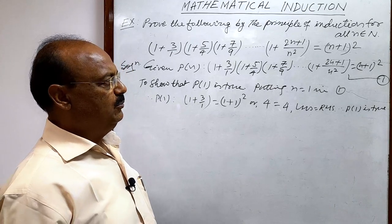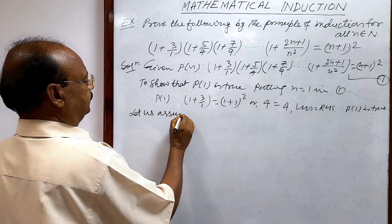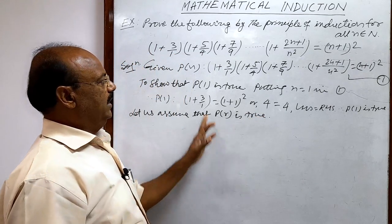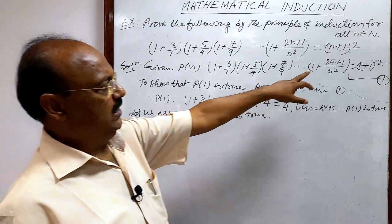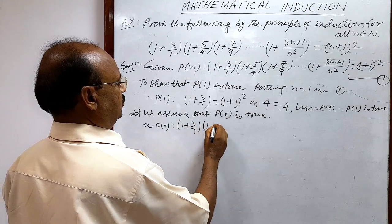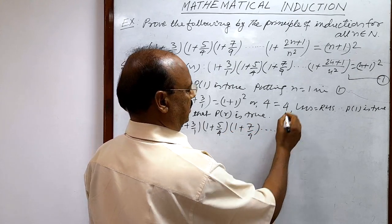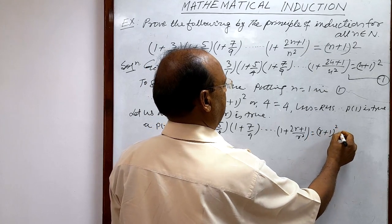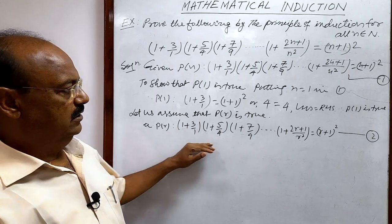For the next step, we assume that P(r) is true, meaning we put n equal to r. So P(r) is: 1 plus 3 by 1, into 1 plus 5 by 4, into 1 plus 7 by 9, and 1 plus 2r plus 1 by r square, equal to r plus 1 whole square. We call this relation number 2, and we assume it is true.